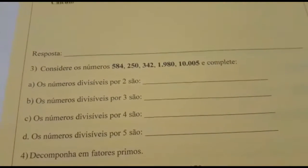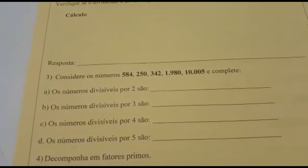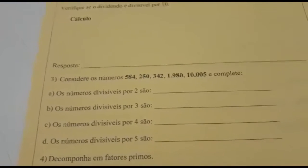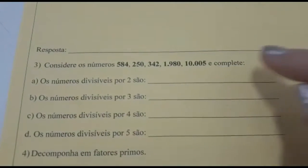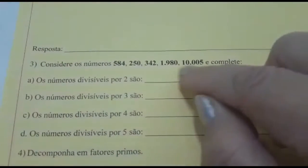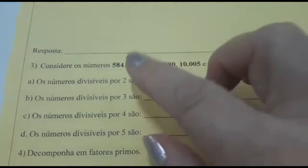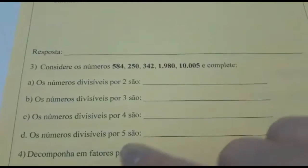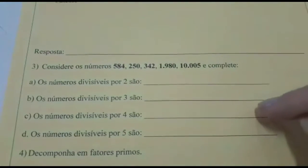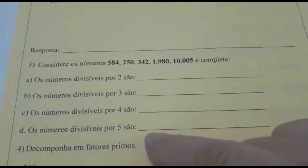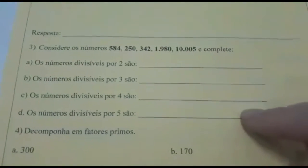Número 3: Considere os números 584, 250, 342, 1980, 1005 e complete. Letra A: os divisíveis por 2 são... Letra B: os números divisíveis por 3 são... Letra C: os números divisíveis por 4 são... Vamos ver quais são esses números que dividem por 4. E os números divisíveis por 5 são... Vão ver esses números e vão ver quais se dividem por 5, e vão colocar os números correspondentes.